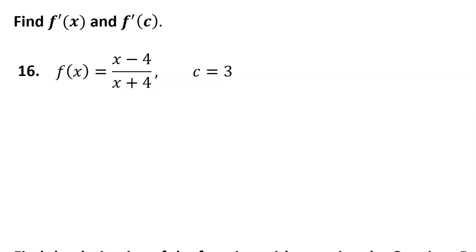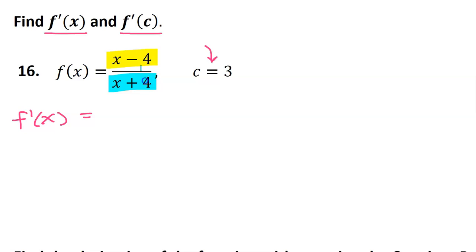Problem number 16 comes in two parts. First we are to find the derivative, and then second we are to evaluate the derivative at the given value. So first let's find f prime. This is definitely a quotient — we've got the high and we've got the low. The quotient rule says low d high less high d low. So low is x plus 4. Then d high — the derivative of the top function. The derivative of x is just 1 and the derivative of a constant is nothing. So I'll put the 1 just to show that I did low d high, but you didn't need to write that at all.